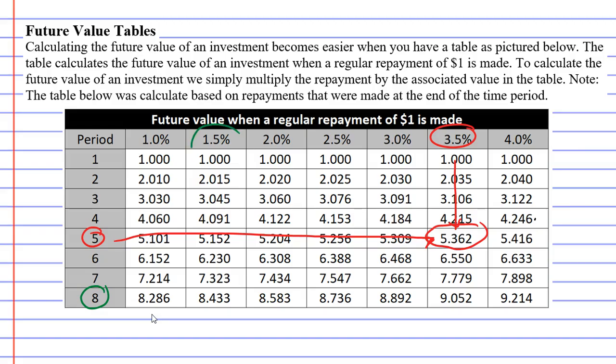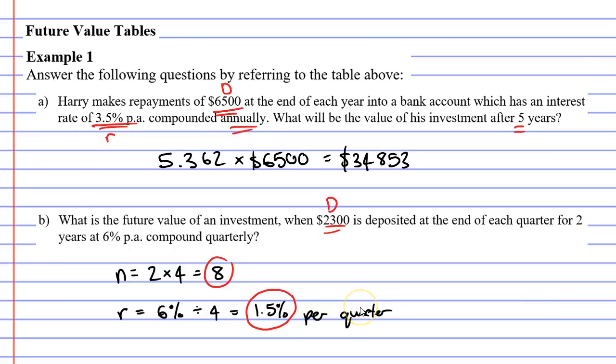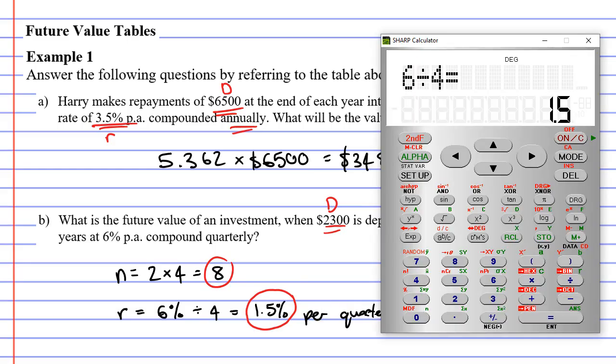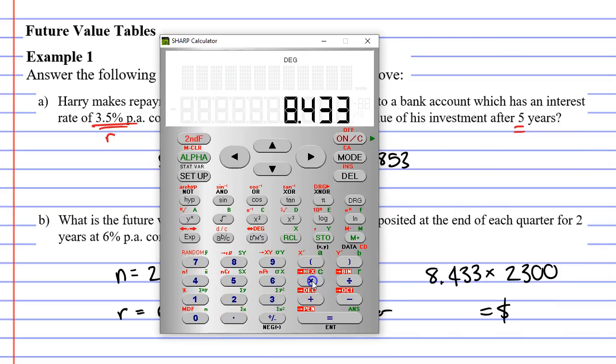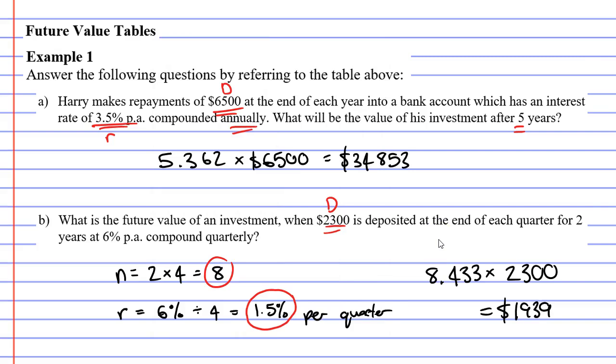So, we've got eight periods, and an interest rate of 1.5%, and they line up with the number 8.433. So, all we do is take this number, 8.433, and multiply it by our repayment, which is $2,300. So, if we deposit $2,300 every quarter over a period of two years, which is eight quarters, compounded quarterly at 6% per annum, this is how much money we will have in our investment account by the end of the two years.